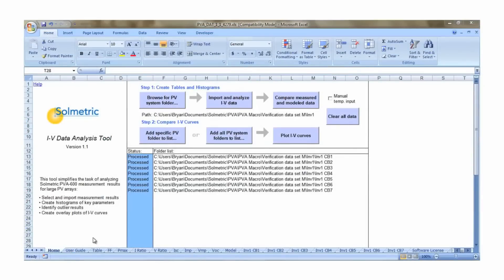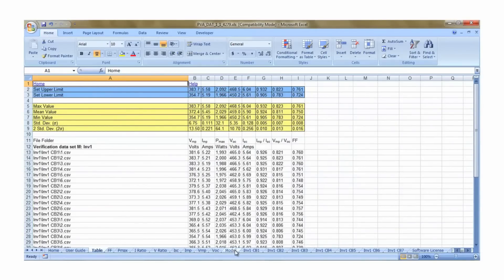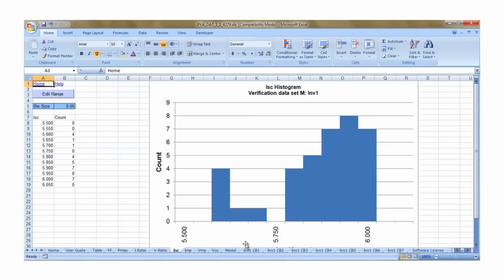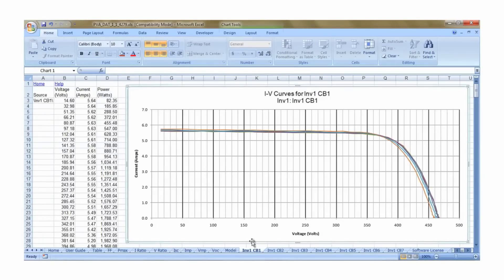The IV Data Analysis Tool provides a convenient method of analyzing PV Analyzer data. The tool imports the data from all the saved traces from a site visit and generates tables, charts, histograms, and IV plots that can be used for client reports and to identify problem strings. The IV Data Analysis Tool will be covered in greater detail in a future video.